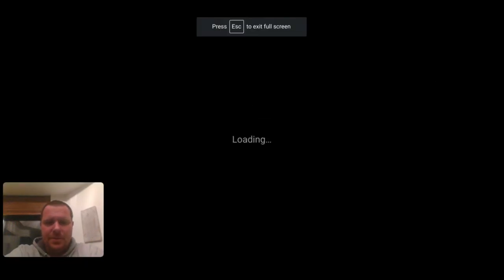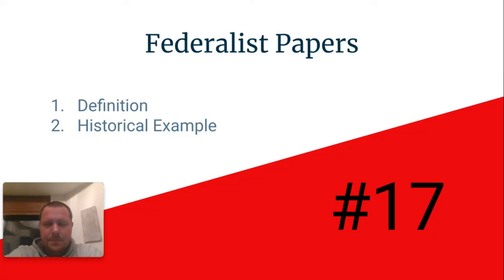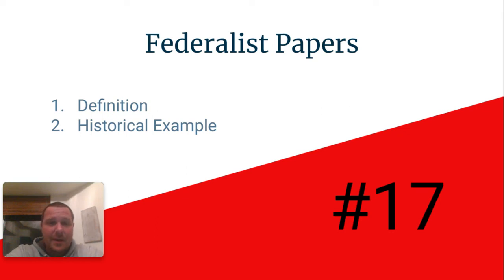EOC review term number 17: the Federalist Papers. After the Founding Fathers wrote the new Constitution, they had to send the new document out to each of the 13 states to see if the states wanted to ratify the new document and make it the official law of the land.